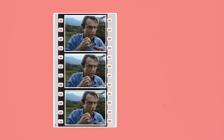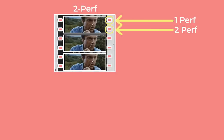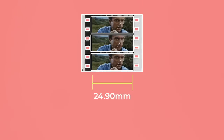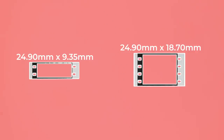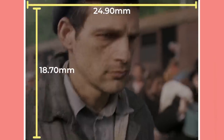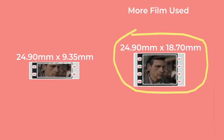35mm film frames can be shot with either 4 vertical perfs, 3 perfs, or 2 perfs. As the width of a 35mm frame is standardised to a size of 24.9mm, the number of perfs only affects the height of the frame that's recorded, with 2 perfs capturing the skinniest surface area and 4 perfs capturing the tallest. Exposing a larger area of film to light is like the digital equivalent of recording at a higher resolution — the larger the area, the more clarity and higher fidelity it will be.